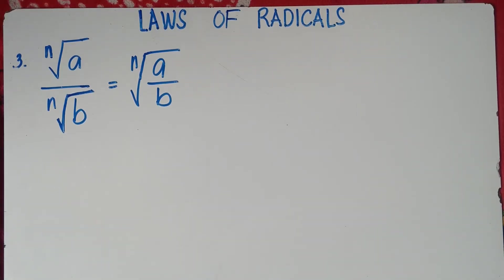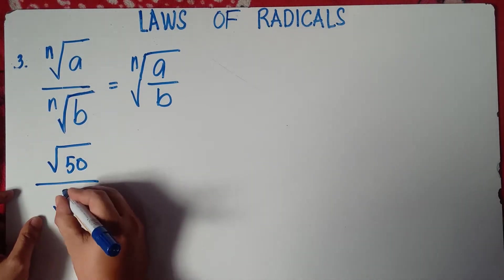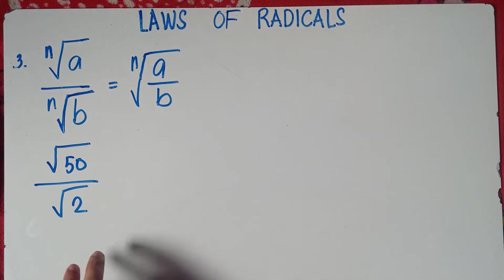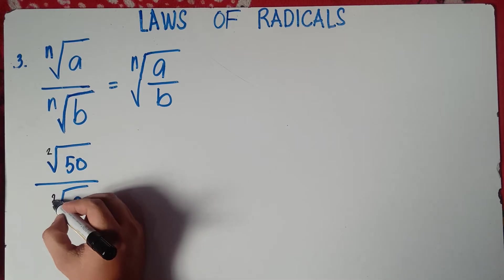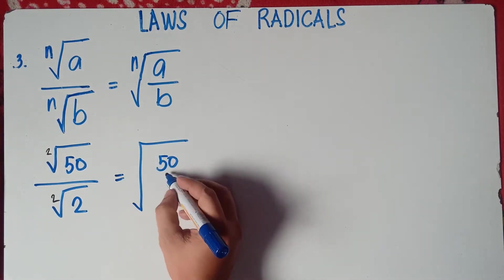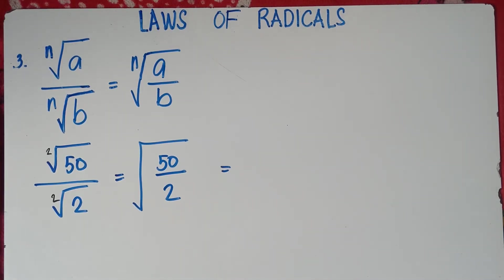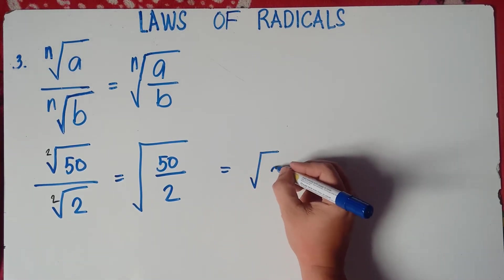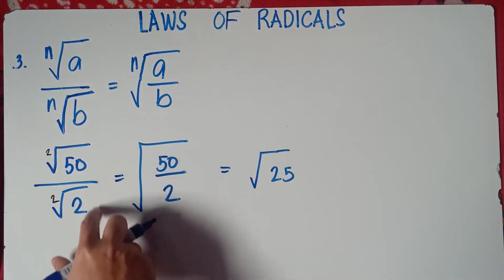Let's try an example for rule number 3. What if you have the square root of 50 divided by the square root of 2? If the teacher asks you to simplify this, since every square root has index 2, they have the same index. So we can write this as the square root of 50 over 2. We can divide 50 by 2, which gives us 25. So this becomes the square root of 25.